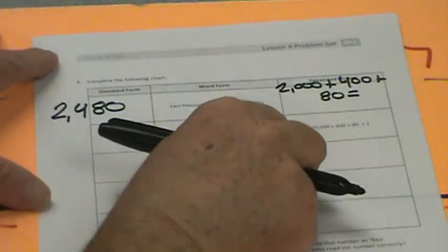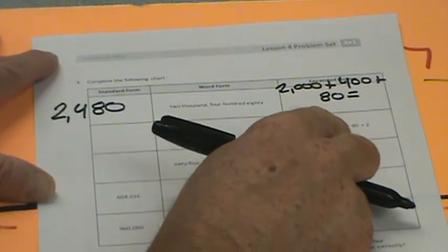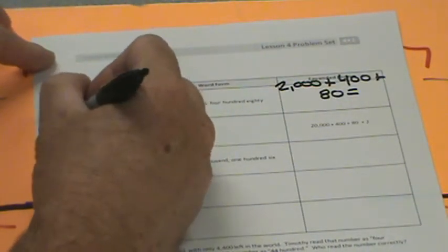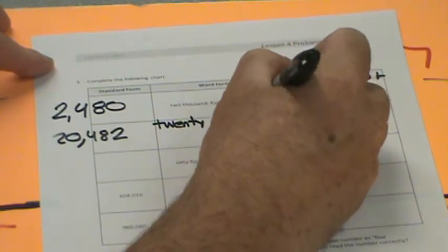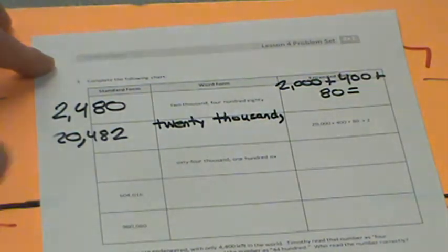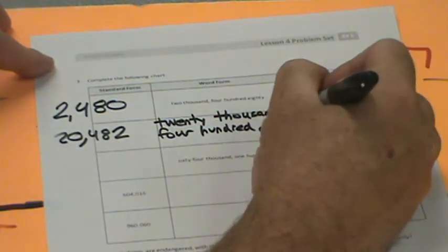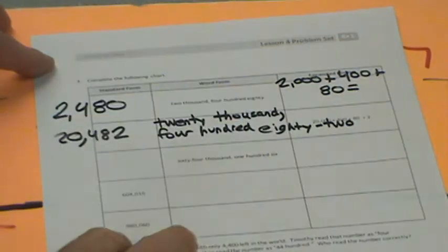This chart is for expanded form. They're giving us the expanded form but no word form and no standard form. This says 20,482. So I'm going to make my 20,000 and 482. Time to do this in written form: twenty thousand, four hundred eighty-two.